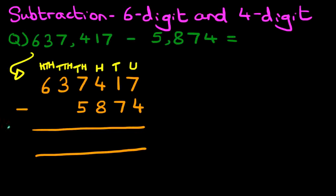First step, check the sign. We are doing minus. We always start with the column on the right-hand side. So let's do this. The units column. What is 7 minus 4? That's right, it is 3.